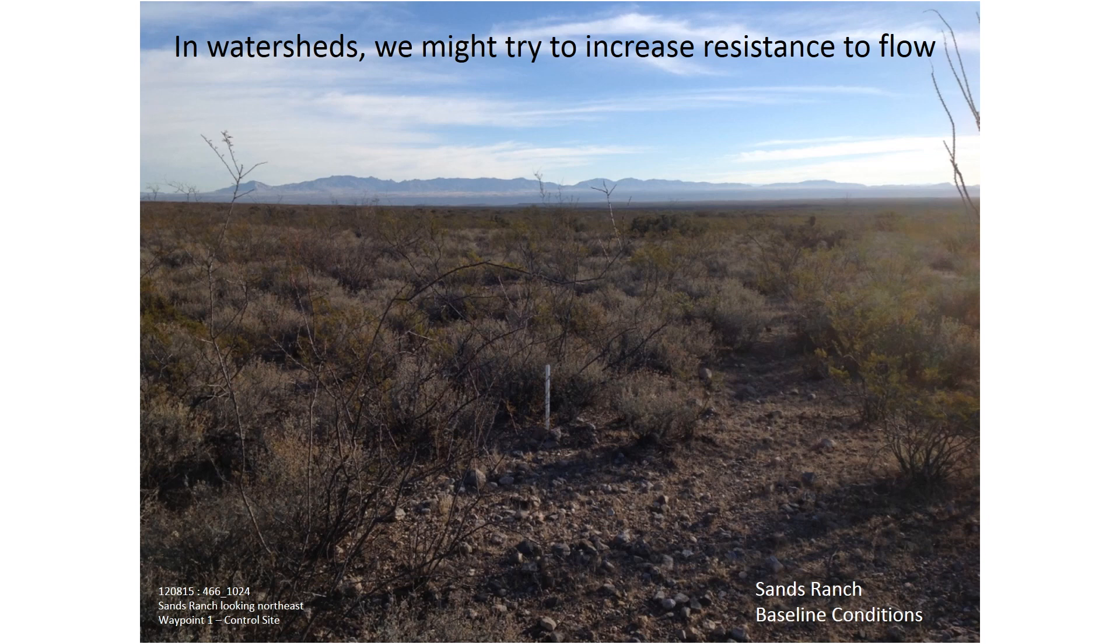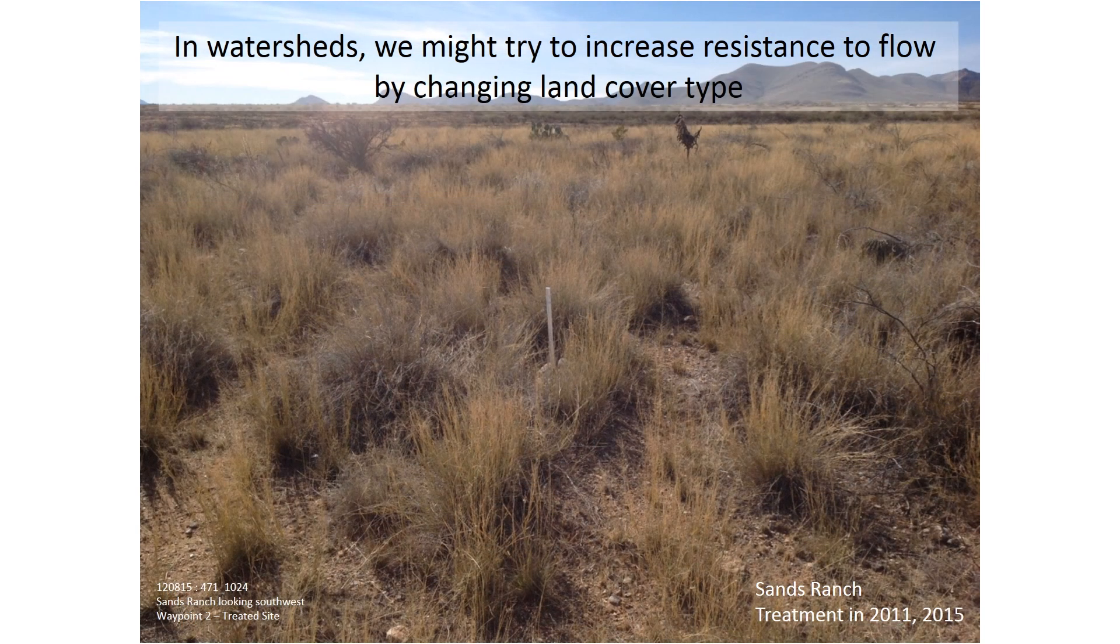In a watershed, we might try to increase resistance to flow by changing the land cover type to something that's more effective at resisting runoff, in this case, grasses.